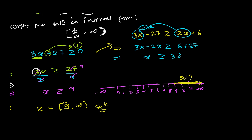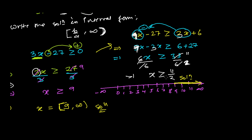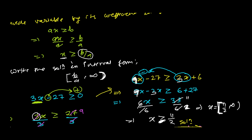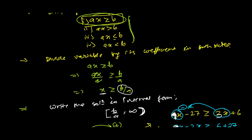But if instead we had 9X − 3X on one side, it would be 6X ≥ 33. Then we divide both sides by 6, giving X ≥ 33/6, which simplifies to X ≥ 11/2. To write in interval form: since it's greater than or equal to, we use a closed bracket: [11/2, ∞). If there were no equals-to sign, we'd use an open bracket. I hope you understand how to find the solution — we're going to do a lot of practice.